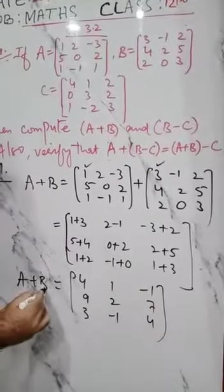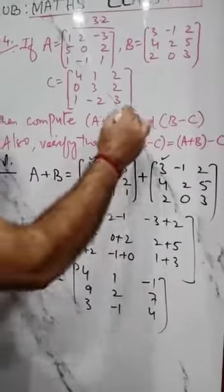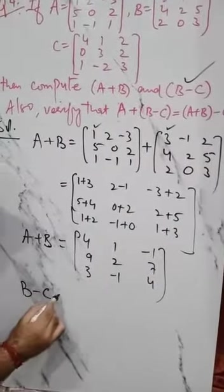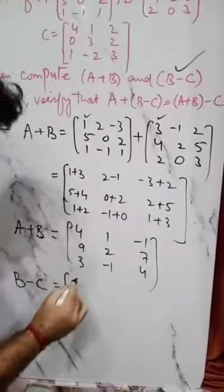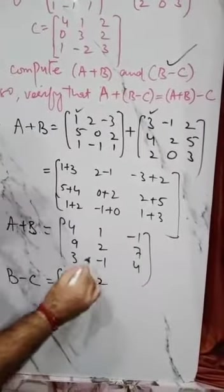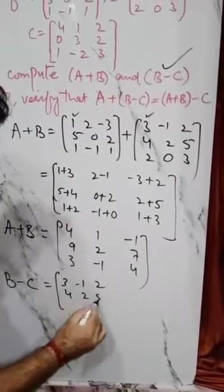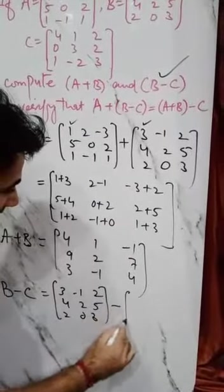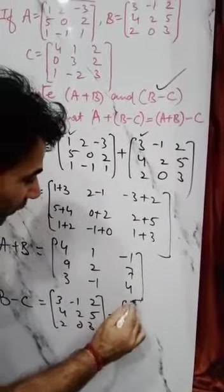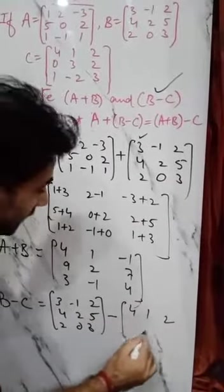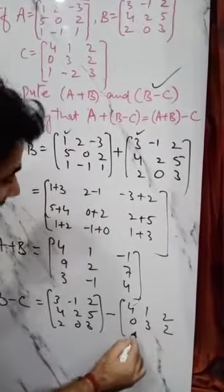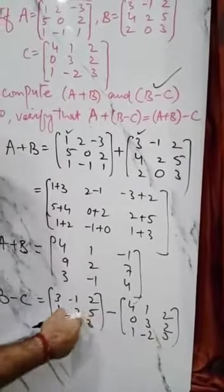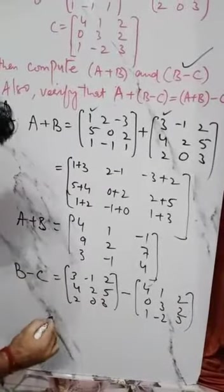So this is A plus B. Now let us move to B minus C. Matrix B is 3, minus 1, 2 in the first row; 4, 2, 5 in the second row; 2, 0, 3 in the third row. Minus matrix C, whose entries are 4, 1, 2 in the first row; 0, 3, 2 in the second row; and 1, minus 2, 3 in the third row. So this time we have to subtract C from B.